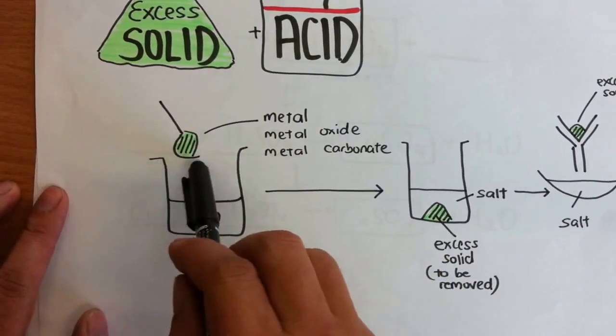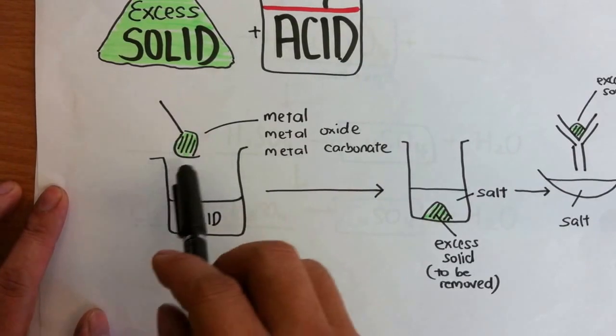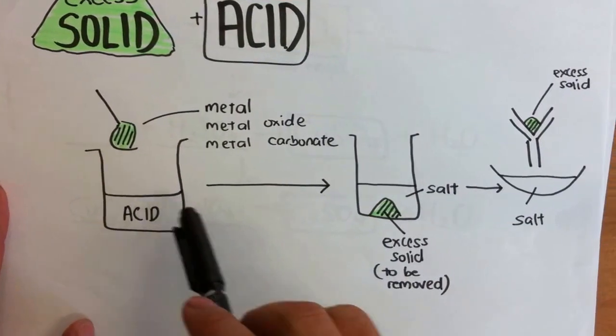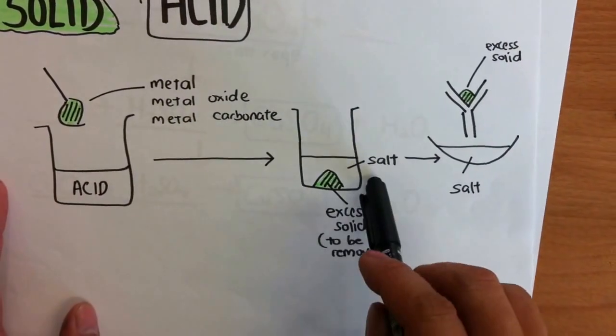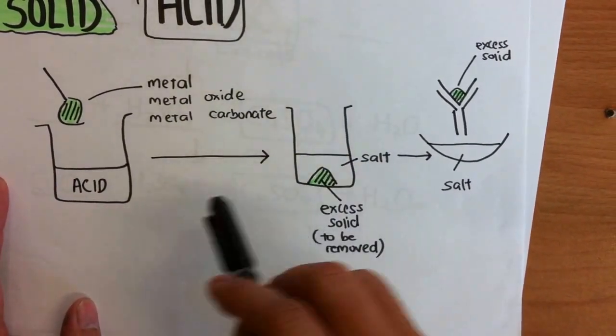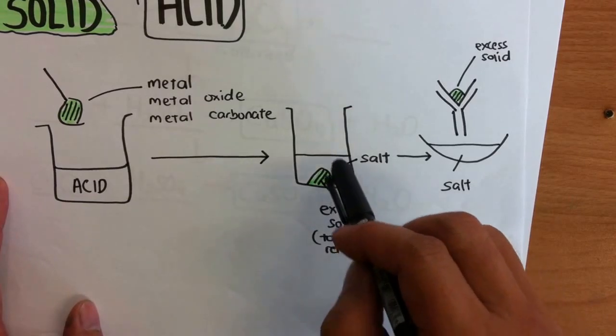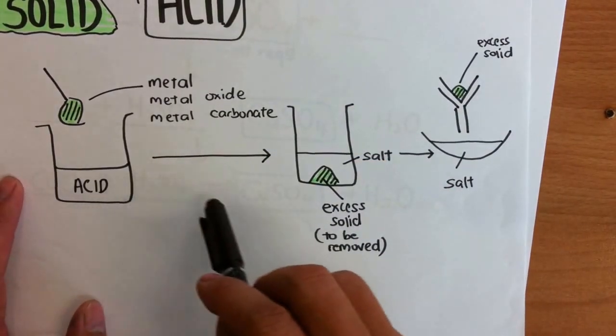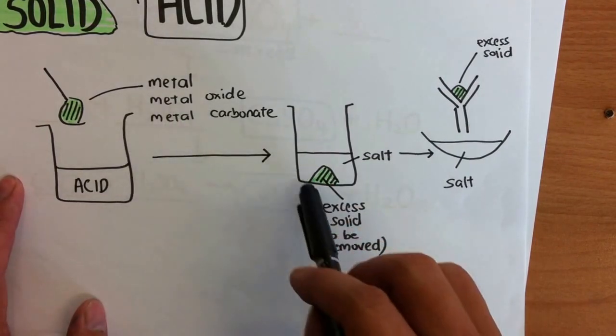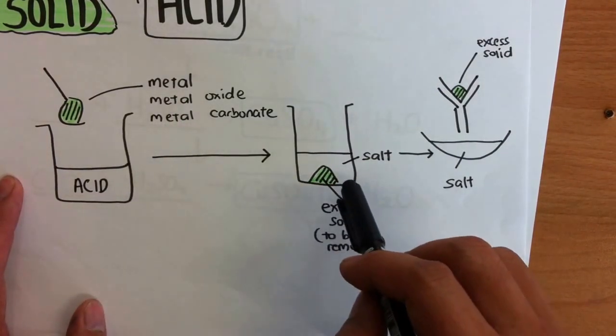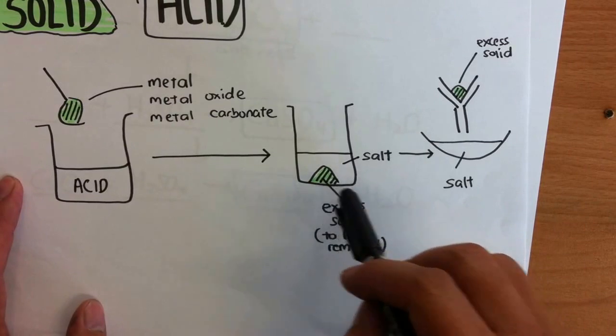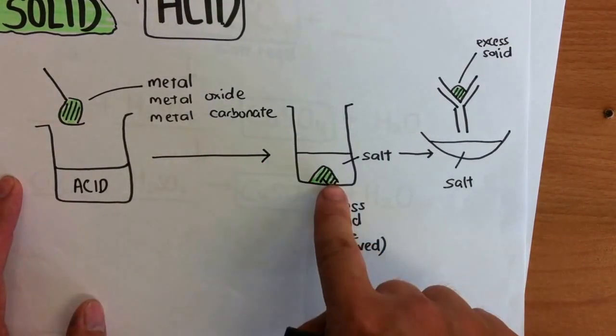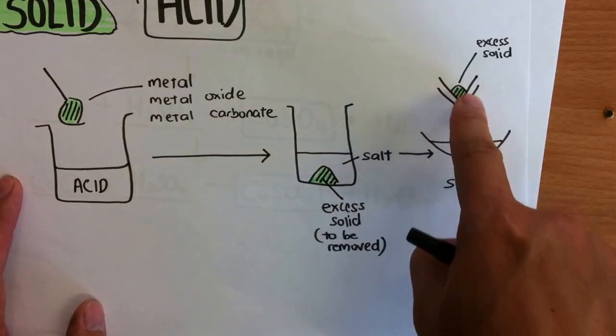So what happens is we grab the powder, solid, and we just put it into a fixed volume of acid. And what happens is a salt will form, there will be a reaction, and we just keep adding it. At the same time we also apply heat so that we can speed up the reaction. Now we will come to a point where the acid is fully used up, and the solid that we have added in does not dissolve anymore.